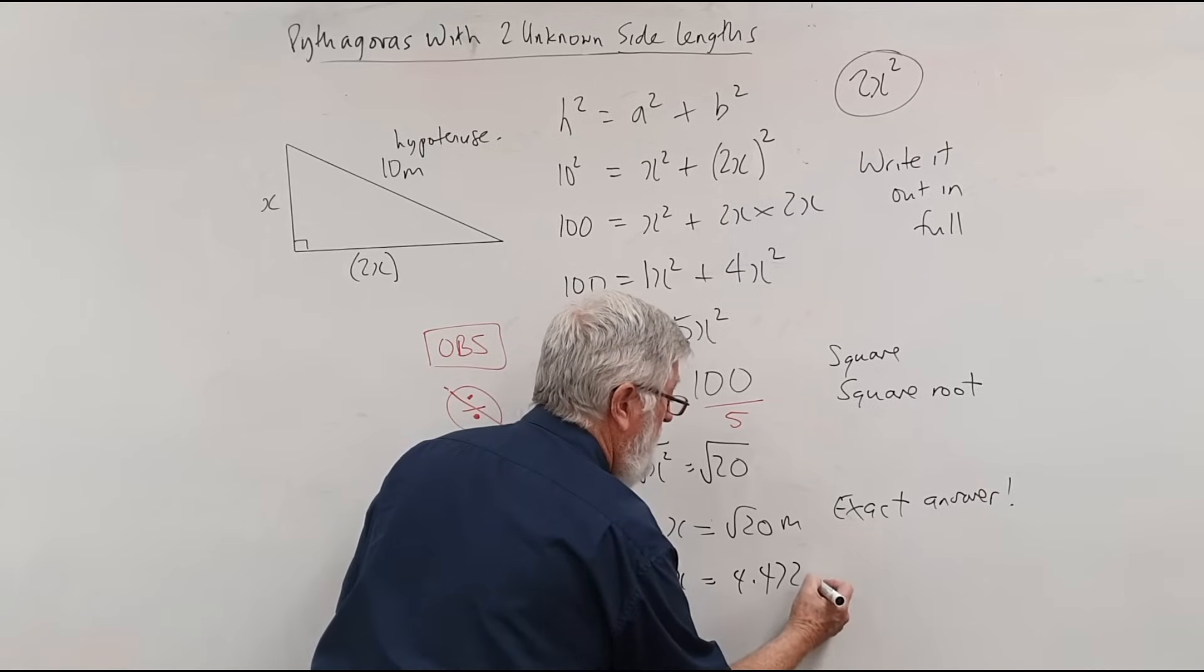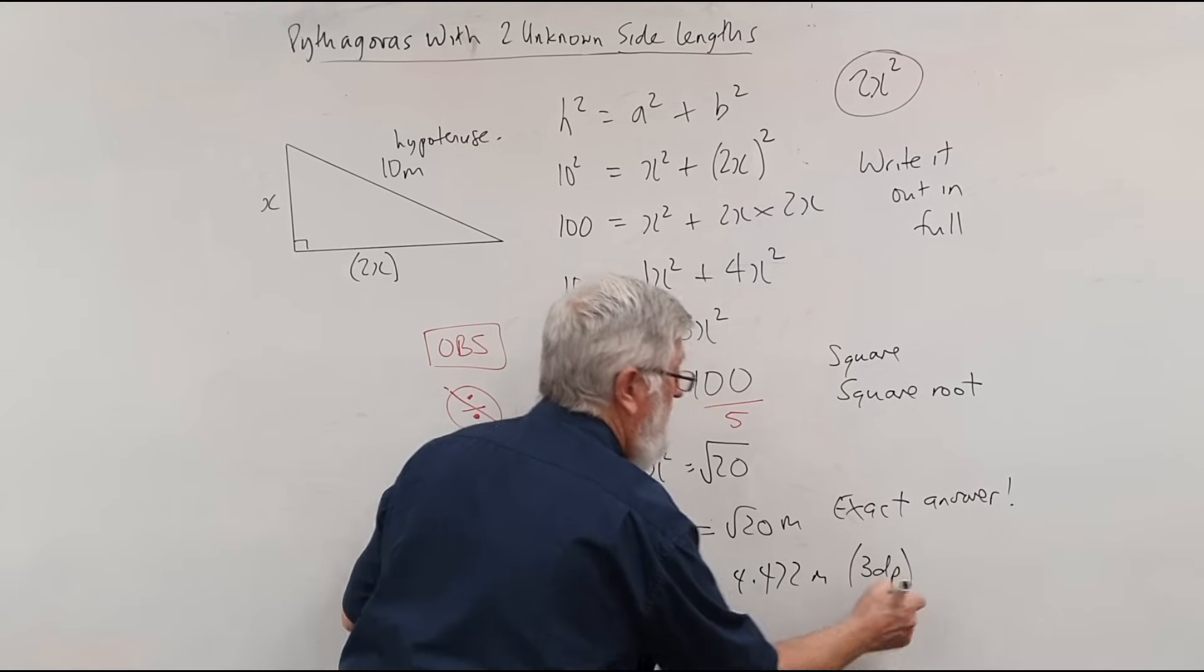Then you put in your calculator and we get 4.472, and more numbers if you wanted to, metres. And if that was the case, I've done it to three decimal places.